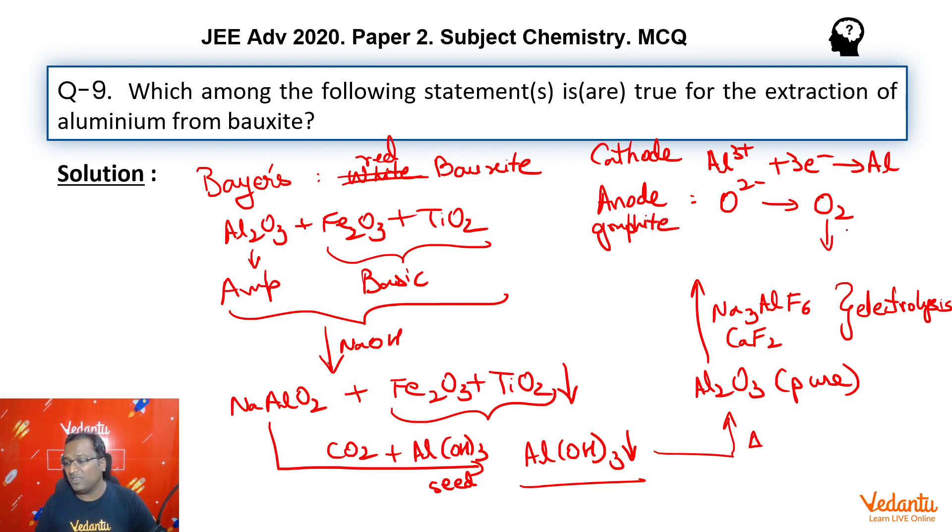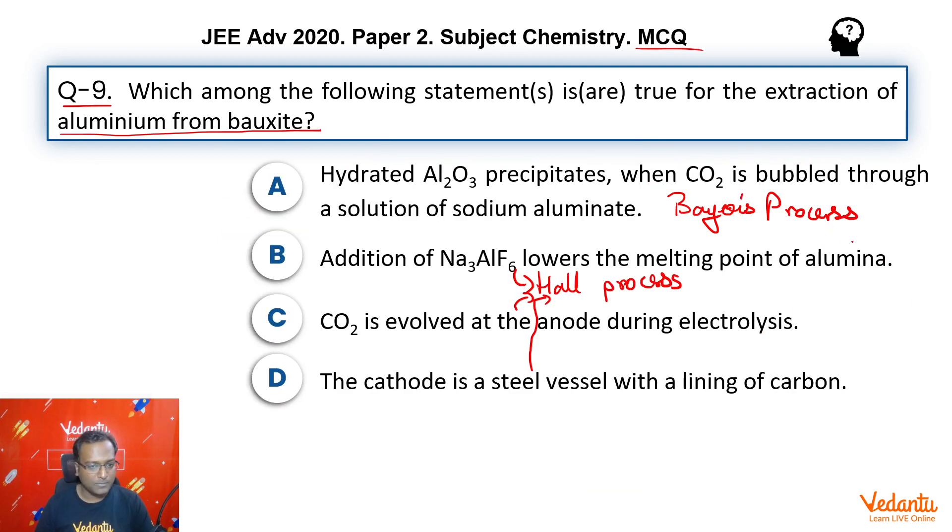So let's go back to our question. Hydrated alumina precipitates when CO2 is bubbled through a solution of sodium aluminate - perfect, correct. Addition of Na3AlF6 lowers the melting point - correct.